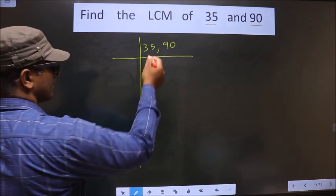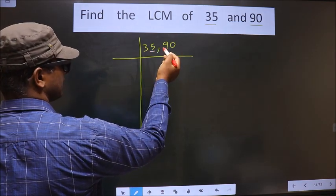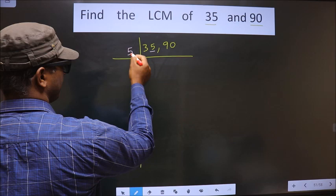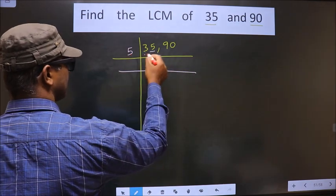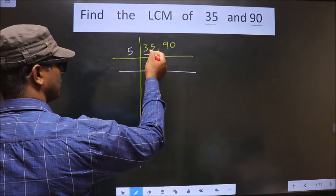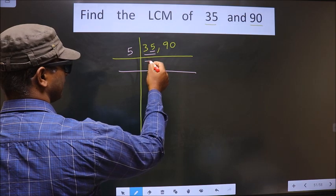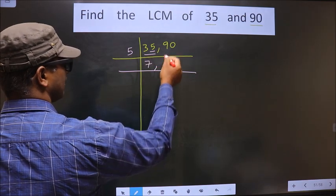Next, for this number, last digit is 5, so we take 5 here. Now, here we have 35. When do you get 35 in the 5 table? 5 times 7 is 35.